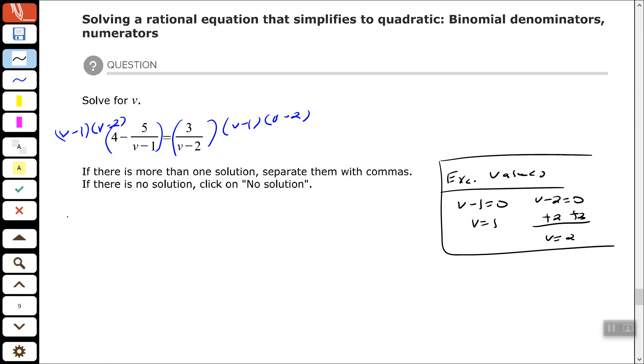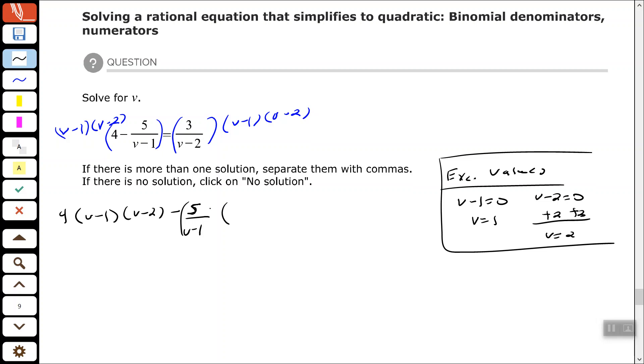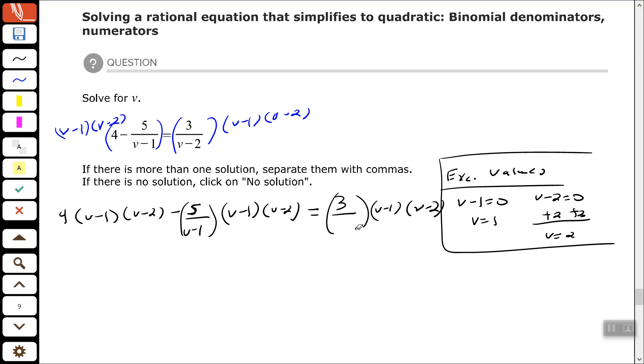So we have 4 times V minus 1 times V minus 2 minus 5. Let's go through here and multiply, show that we're multiplying times V minus 2.